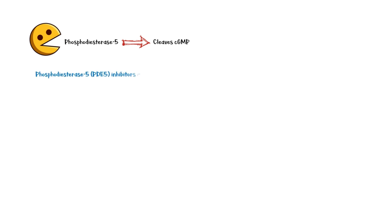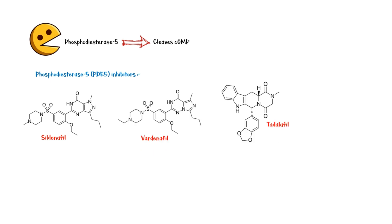Phosphodiesterase 5 inhibitors such as sildenafil, vardenafil, and tadalafil are structurally similar to cyclic GMP. These medications competitively bind to the phosphodiesterase enzyme and prevent cyclic GMP from hydrolysis, which enhances the effects of nitric oxide on penile smooth muscle cells, leading to a prolonged erection.